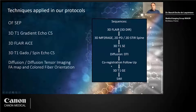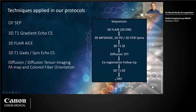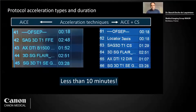I also use co-registration follow-up with the OLEA technique to see new lesions, the 3D T1 gradient echo for the follow-up of atrophy, and the susceptibility weighted imaging for the differential diagnosis and the so-called central vein sign. With ACE and the acceleration technique like ACE in synergy with CS, we are able to do most of the protocol in less than 10 minutes.